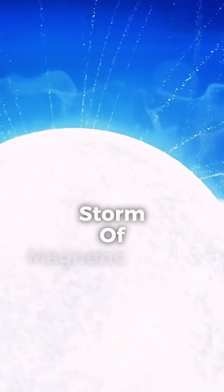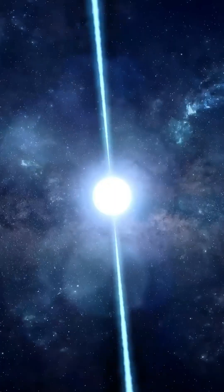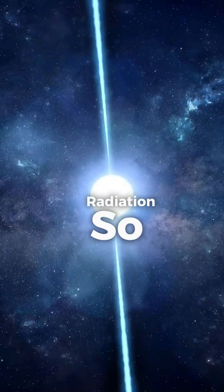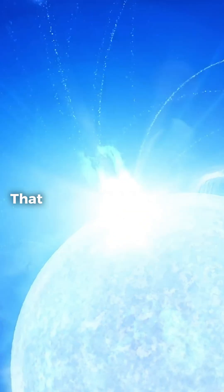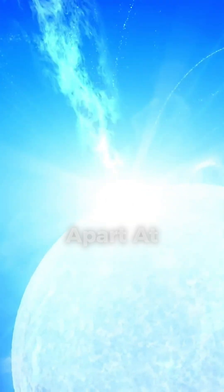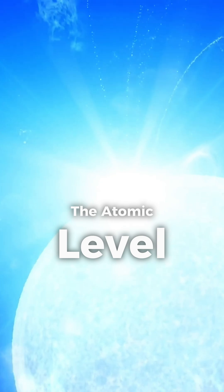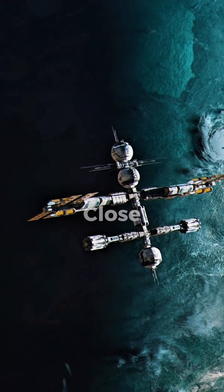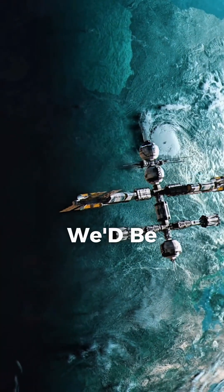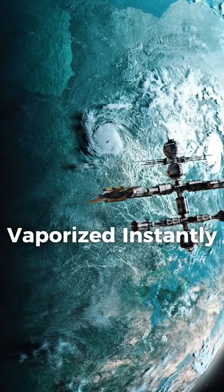Its surface is a storm of magnetic chaos. Radiation so intense that anything nearby is ripped apart at the atomic level. If Earth were as close as the Moon, we'd be vaporized instantly.